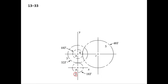Gear 2 is a pinion gear mounted on shaft A. Gear 2 is meshed with gear 3, which is mounted on shaft B. Gear 4 is also mounted on shaft B, and gear 5 is mounted on shaft C, meshed with gear 4. We have 18 teeth on gear 2, 32 teeth on gear 3, 18 teeth on gear 4, and 48 teeth on gear 5.